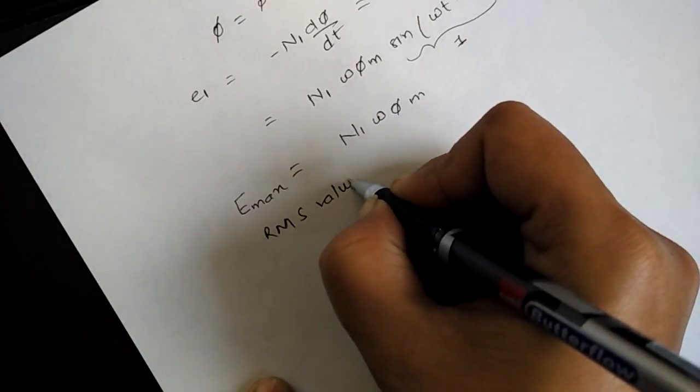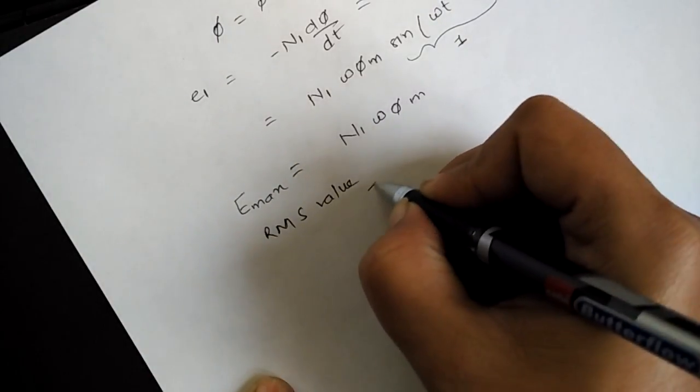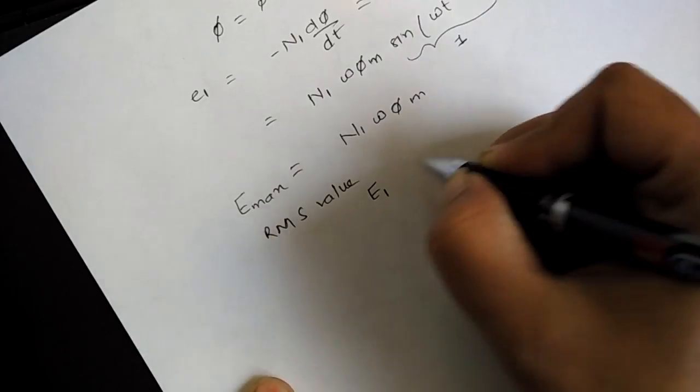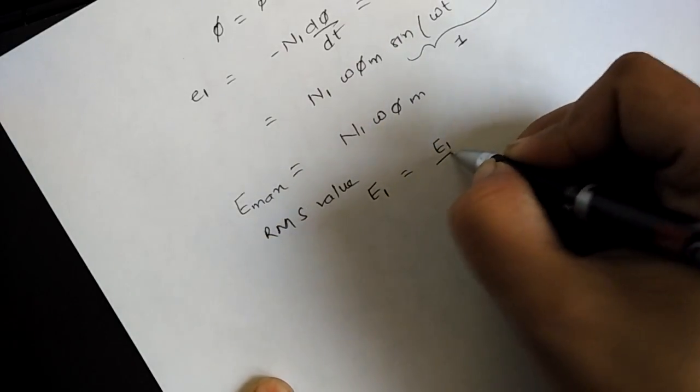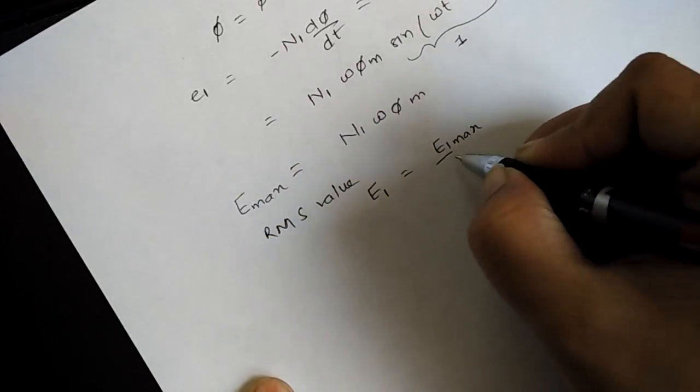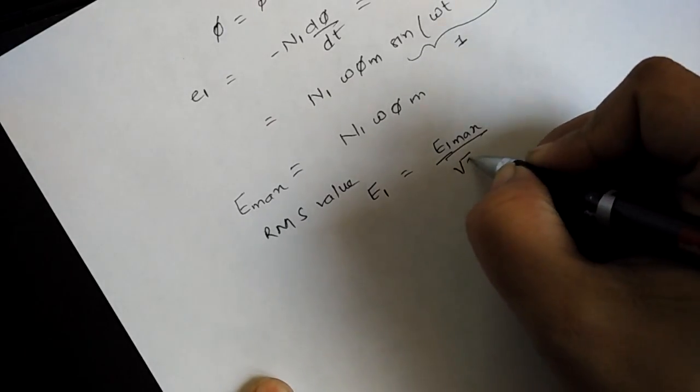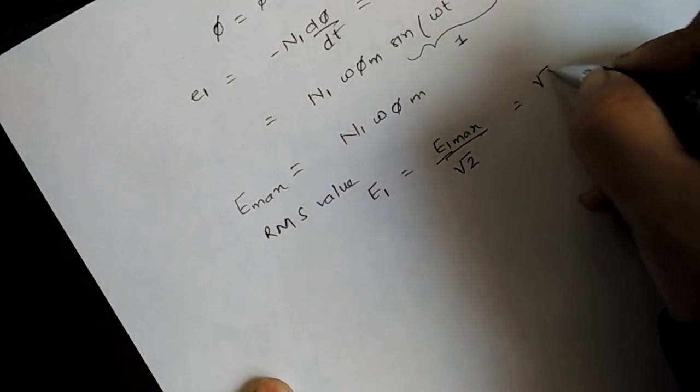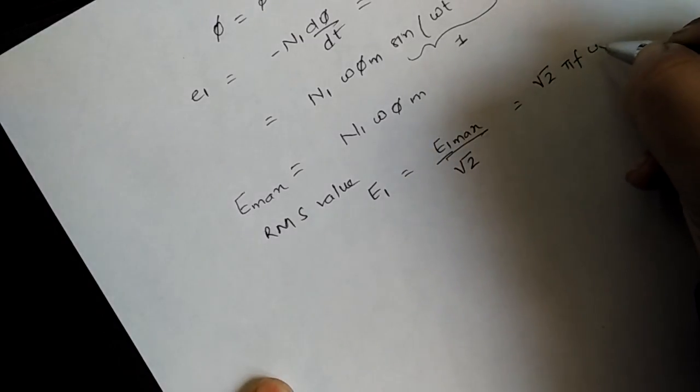Now if we talk about the RMS value, it is E_max upon root 2, which you can write as root 2 pi f n1 into phi_m. This is your equation 1.